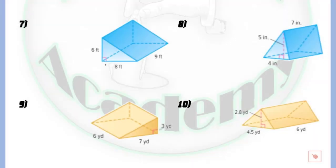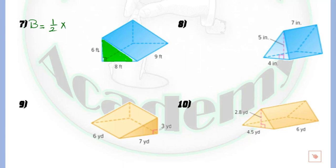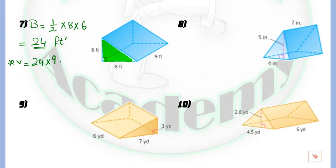In question number 7, the base is a triangle, so we have a triangular prism. We follow the same steps as before. First, find the area of the base: the area of the triangle equals one-half times base times height, which is one-half times 8 times 6, equaling 24 square feet. Then the volume equals 24 multiplied by the height of the prism, which is 9, giving an answer of 216 cubic units.